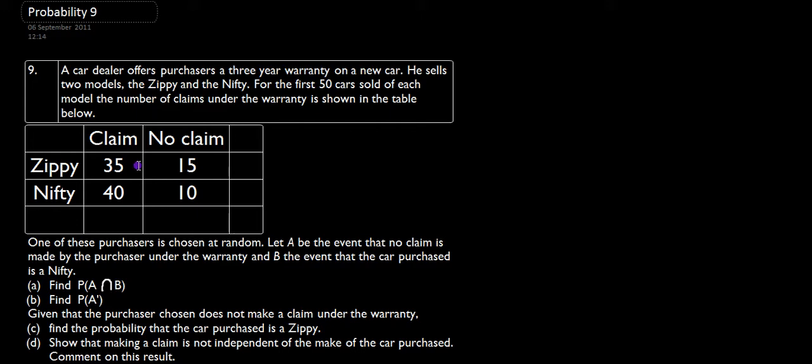We've got 35 against a Zippy and 40 against a Nifty. Let's just put our totals in. So we've got a total here, 15 plus 35 gives us 50, because it's the first 50 cars sold. 40 plus 10 gives us 50 here too.